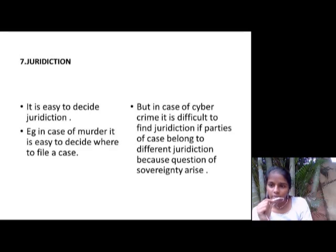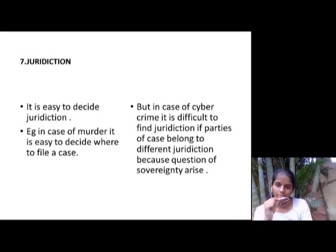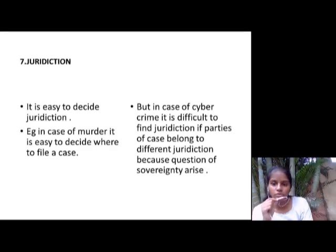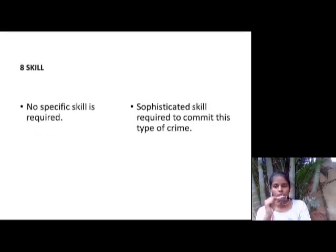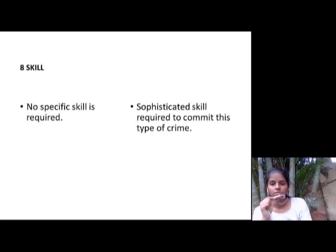Jurisdiction: In a conventional crime, it is easy to decide jurisdiction — for example, in a case of murder, it is easy to decide where to file a case. But in cyber crime, it is difficult to find jurisdiction if parties of a case belong to different jurisdictions, because the question of sovereignty arises. The last difference is Escape. For a conventional crime, there is no requirement of specialized skills, but in cyber crime, sophisticated skills are required to commit a crime.